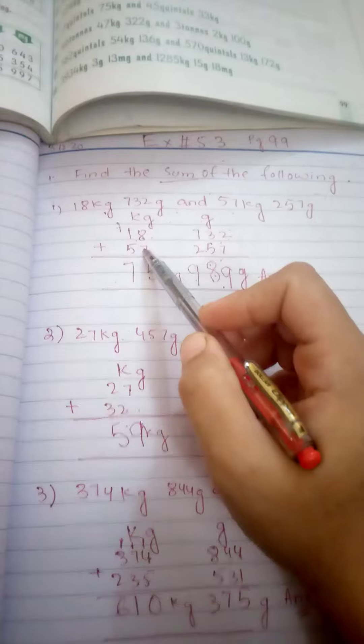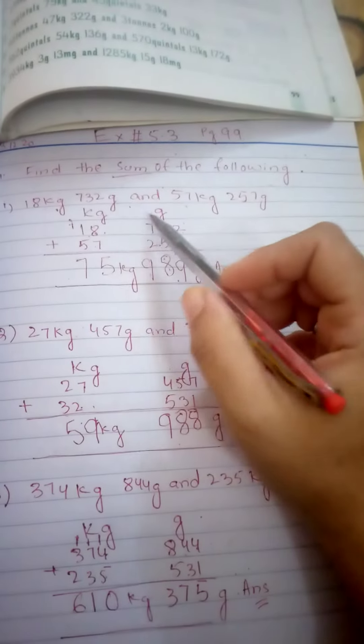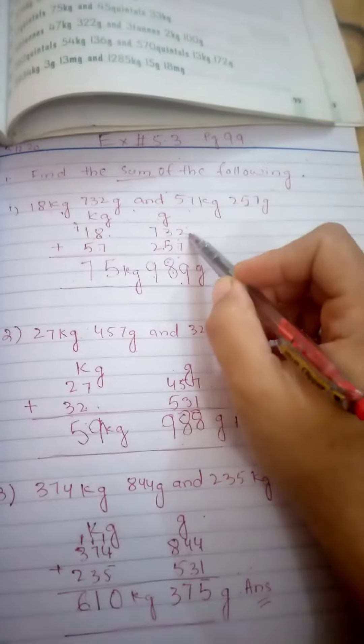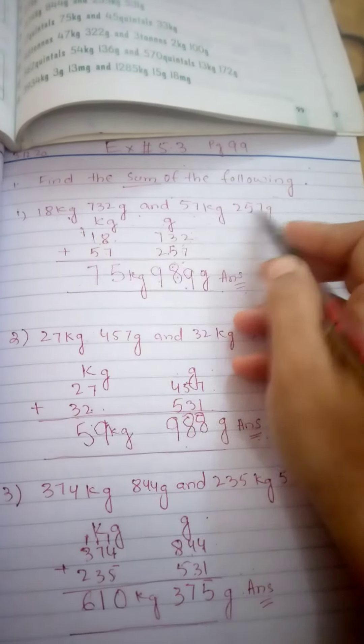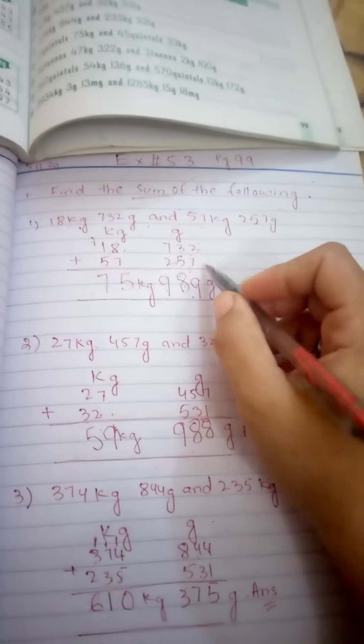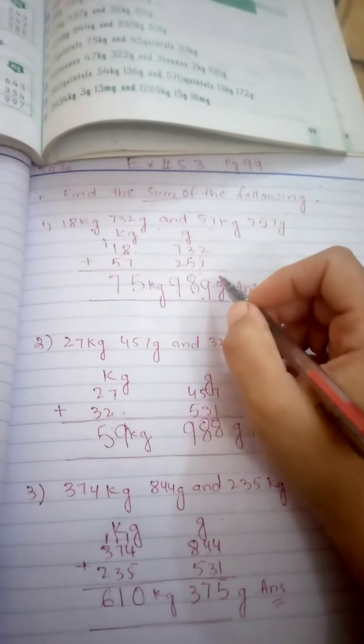Second, we write 18 in the column of kg and 57 in the column of kg. We write 732 grams in the column of grams and 257 in the column of grams. Now we start the addition.